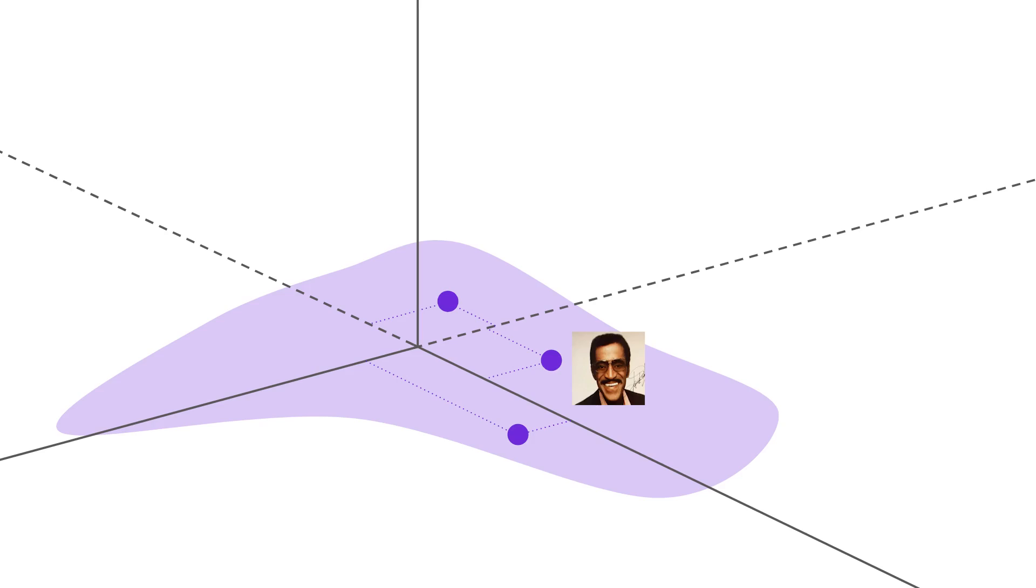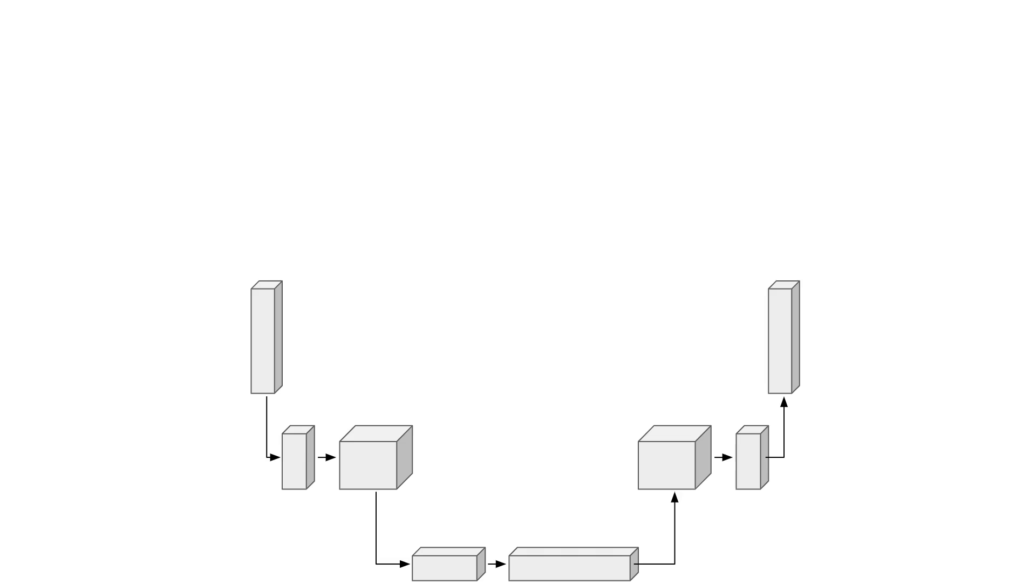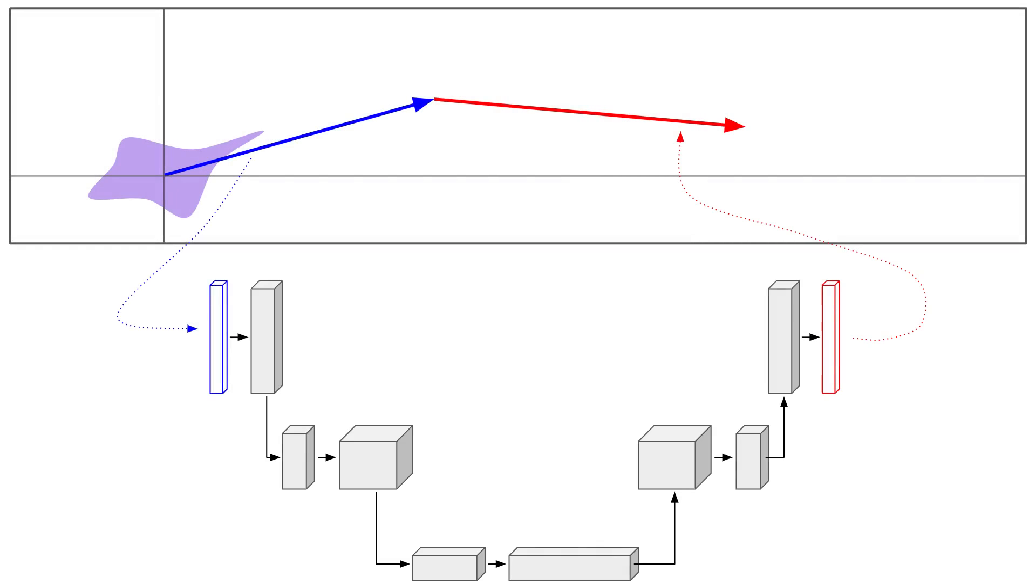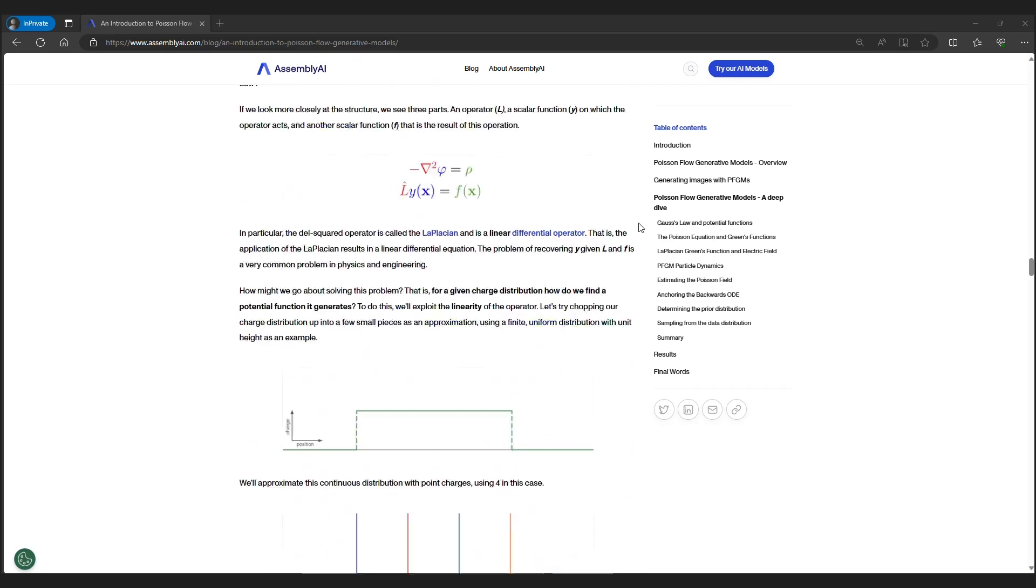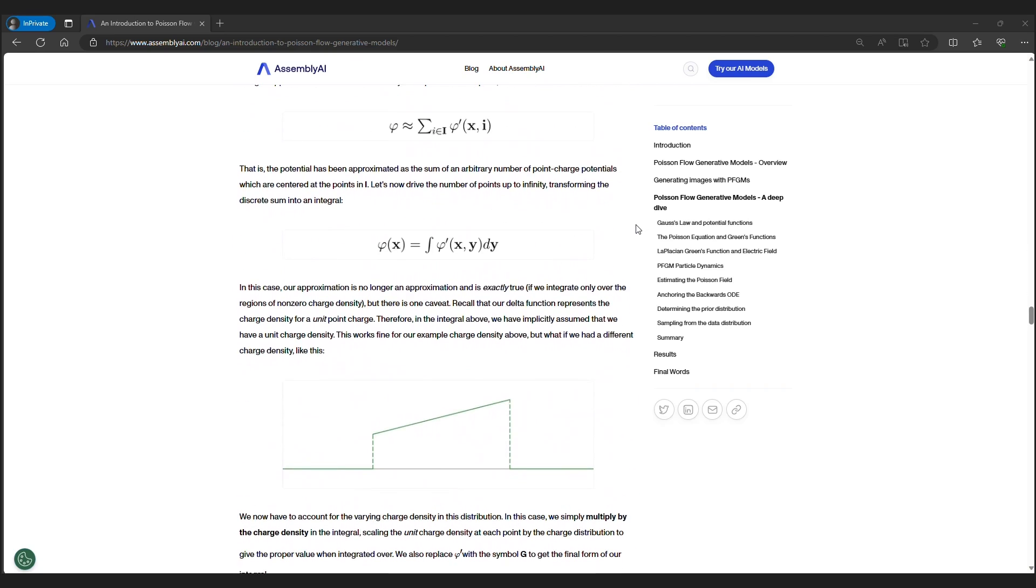In reality, we learn an approximate field by using training data sampled from the data distribution. If we have a data set of images, for example, we learn the field it generates at every point in the high dimensional space by simply adding the electric fields generated by each image treated as a charged particle. The total field is equal to the sum of these individual field contributions due to the superposition principle. We implement this electric field approximator as a unit, which takes in an input vector for a point in space and returns the electric field vector at that point. If you want to see additional details on how this works, you can check out our article on PFGMs. It contains a deep dive section that includes all necessary background information.